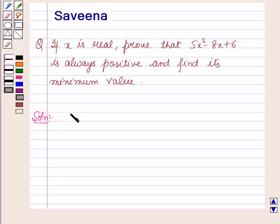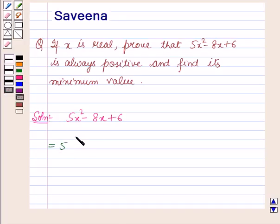The expression is given as 5x squared minus 8x plus 6, which is equal to, by taking 5 common within brackets, x squared minus 8 by 5x plus 6 by 5.